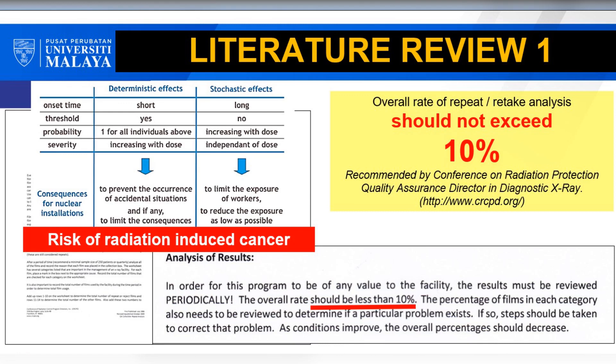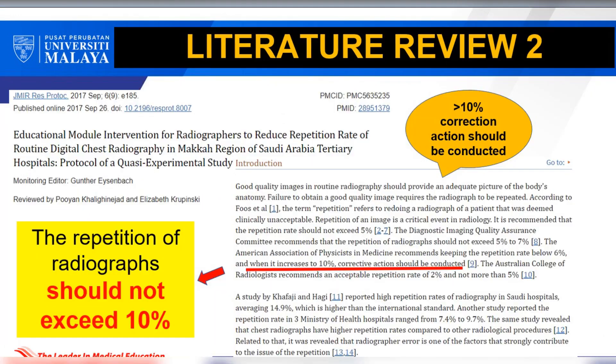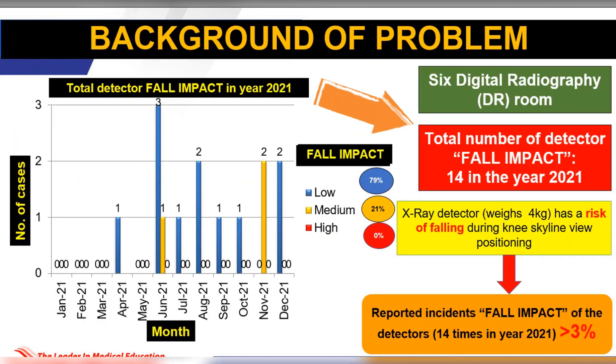In addition, the repeat X-ray could increase the risk of radiation-induced cancer. Therefore, corrective action should be conducted when the retake rate exceeds more than 10%. There were 14 incidents of detector fall reported in 2021.